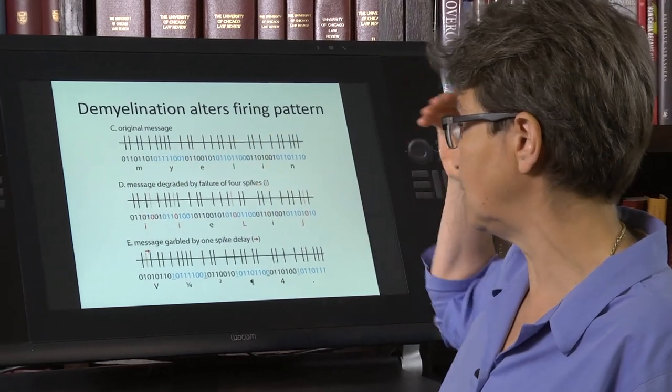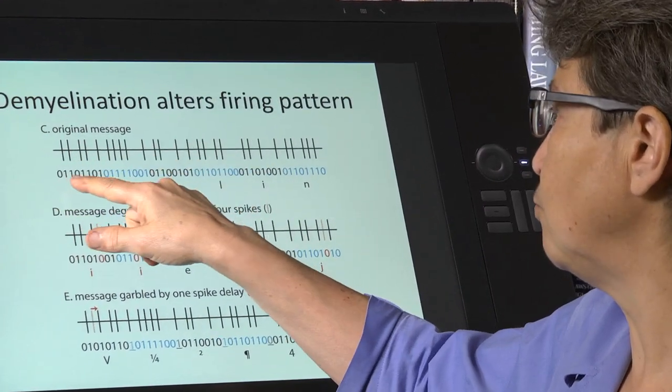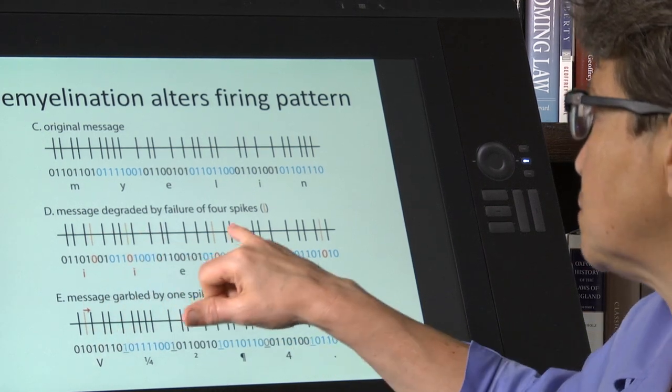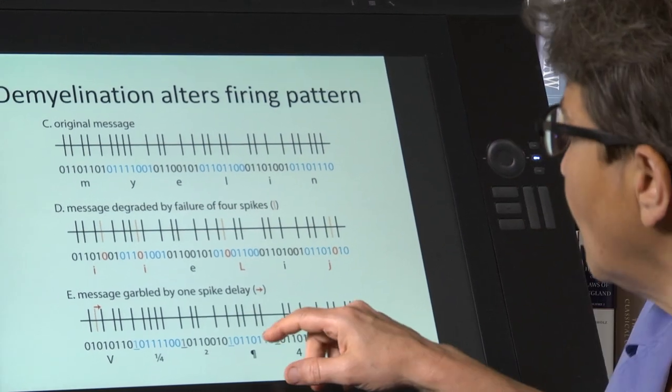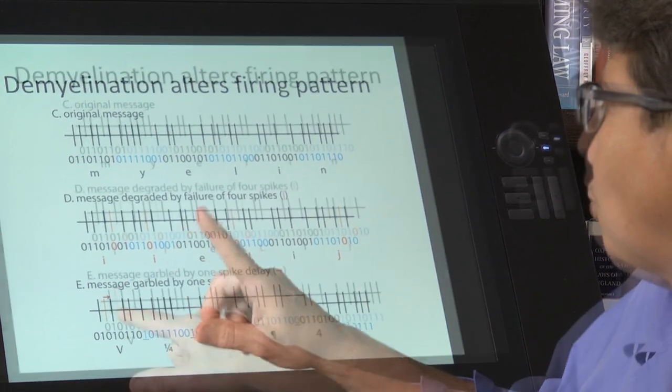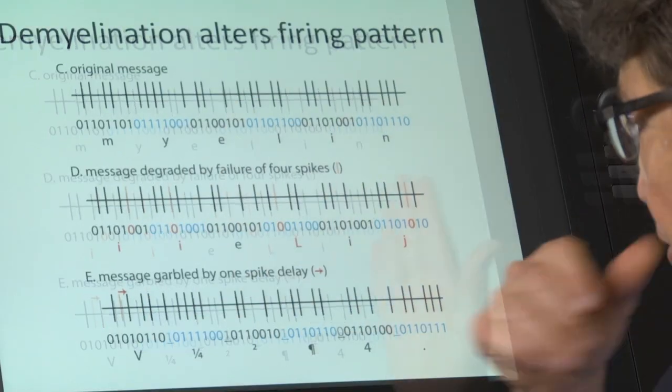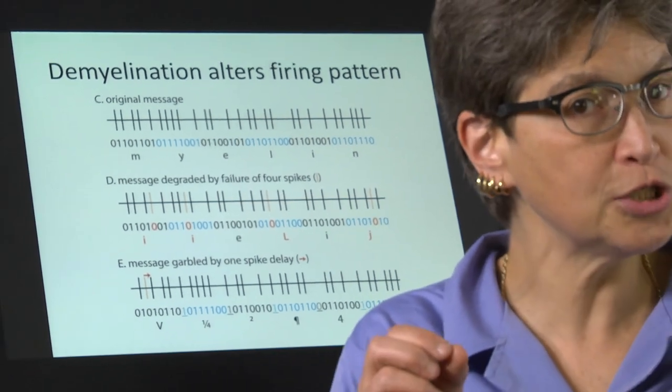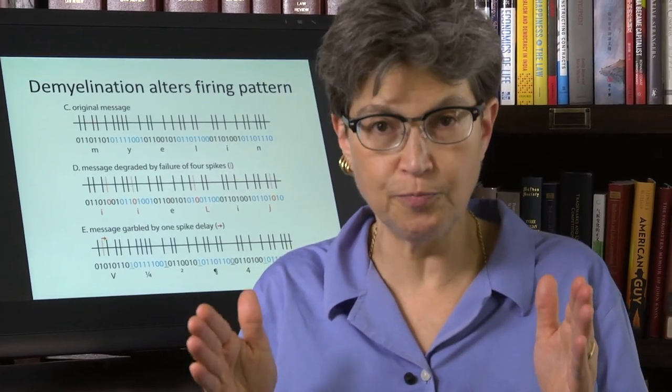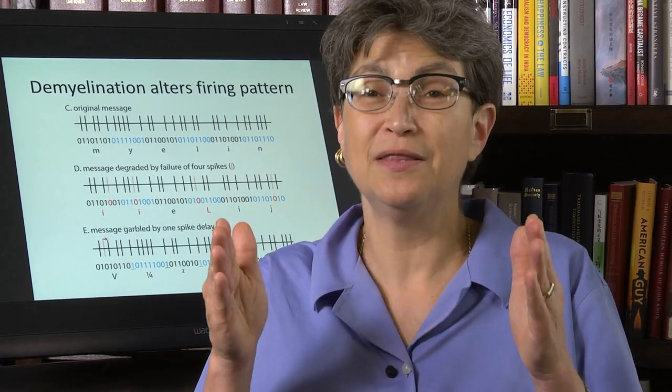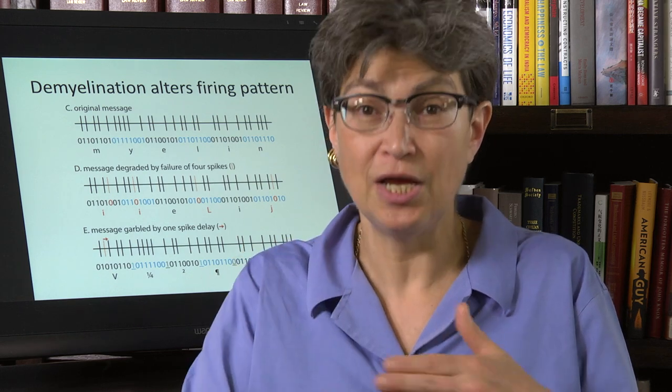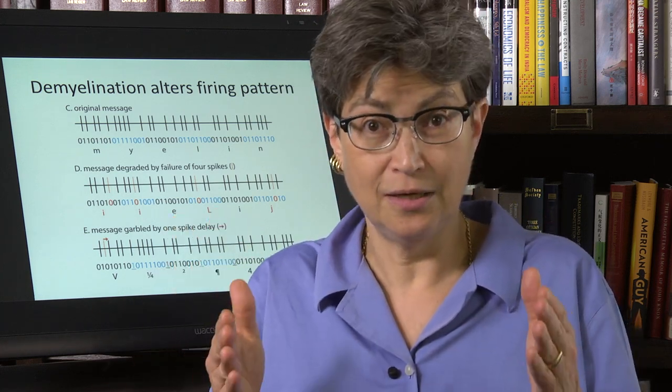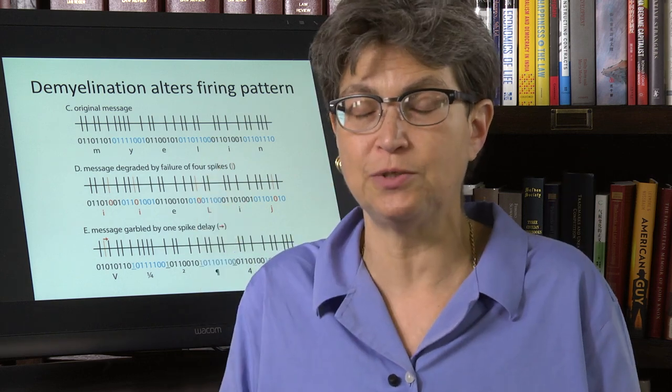Here you have this is an original message. If you convert this to zeros and ones, it spells out in computer code, it spells out myelin. But if you just lose four spikes because of demyelination, then you get a totally different message. If all the spikes are just delayed by one moment, one interval, then you also get a completely garbled message. So the point being that demyelination, any disruption that's commonly produced by demyelination is going to completely disrupt the pattern of the message that a muscle gets. And it's going to lead to the muscle doing things that it should not be doing, that were not intended, because it's getting a garbled message, because the pattern of action potentials is so very important.